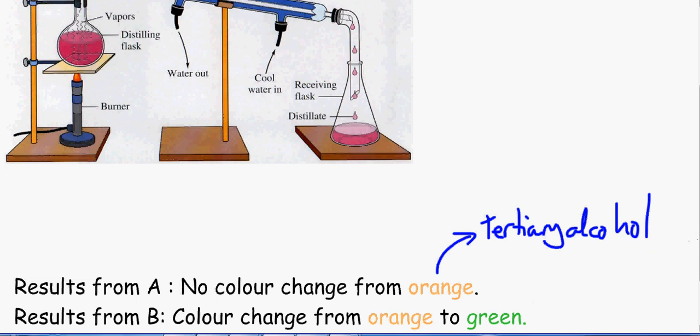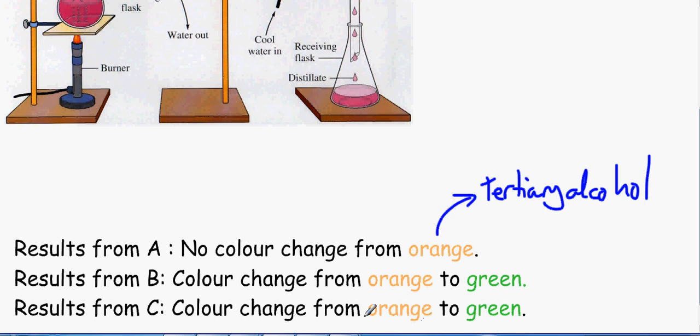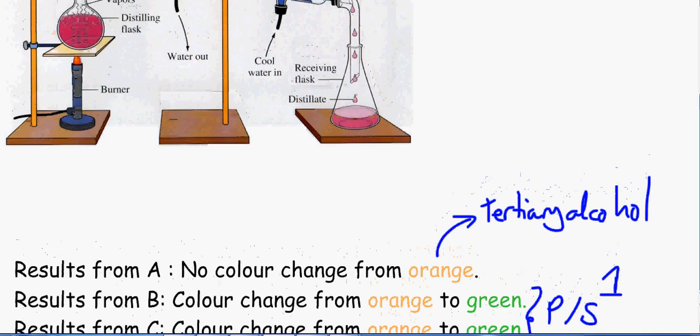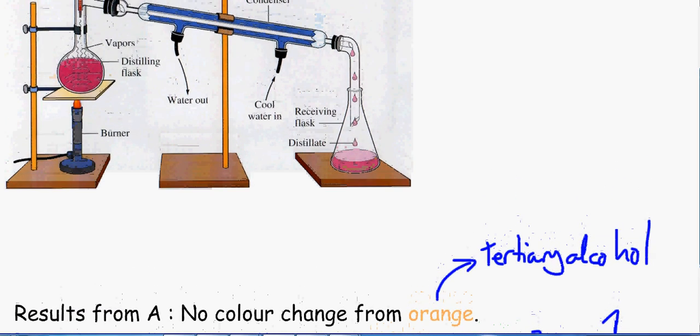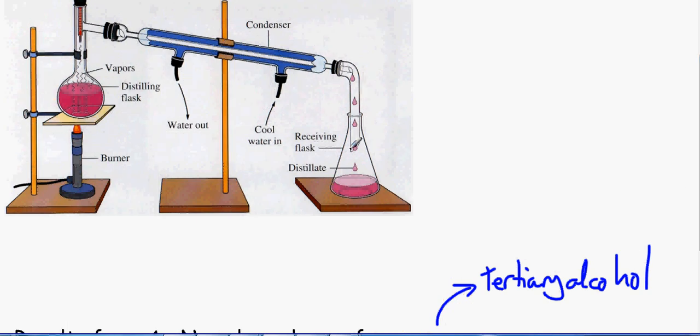The same thing from C, there is a colour change from orange to green. So we know that this is either primary or secondary. So using that information, we can get rid of A, but we can still look at A just to make sure that we do have a tertiary alcohol.